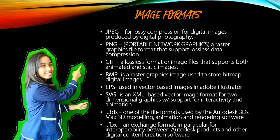Image formats. JPEG: lossy compression for digital images produced by digital photography. PNG (Portable Network Graphics): a raster graphics file format that supports lossless data compression. GIF: a lossless format for image files that supports both animated and static images. BMP: a raster graphics image used to store bitmap digital images.